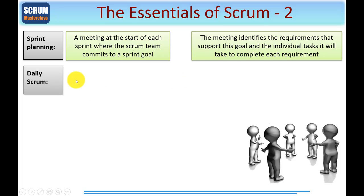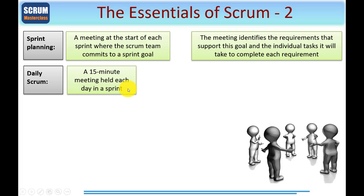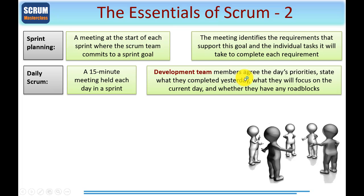The Daily Scrum — normally a 15-minute meeting held each day in a Sprint. It's been found that it's best to do this standing up if possible, possibly in a small meeting room with someone taking notes. You go around the team members one at a time: checking what's been achieved, what hasn't been achieved, what each team member is going to be working on for the rest of the day, and any impediments or issues that need to be resolved. The development team members agree the day's priorities, state what they did yesterday, what they will focus on today, and whether they have any roadblocks — also called impediments, or what you and I would know as issues.